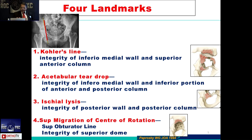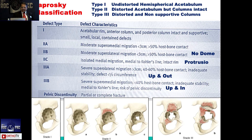The integrity of the posterior wall and posterior column inferiorly is critical, and superior migration is very common. Classification gives a basic idea: Type 1 has minimum defect; Type 2 has intact columns but the cup can migrate superiorly or medially; Type 3 is where both columns are gone and migration can be superior-lateral or superior-medial.